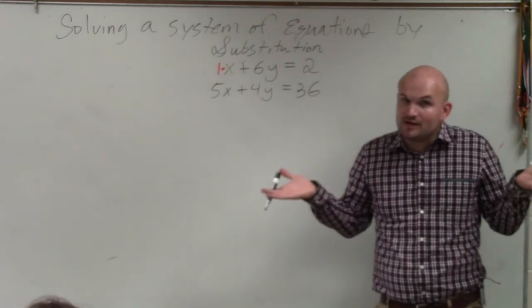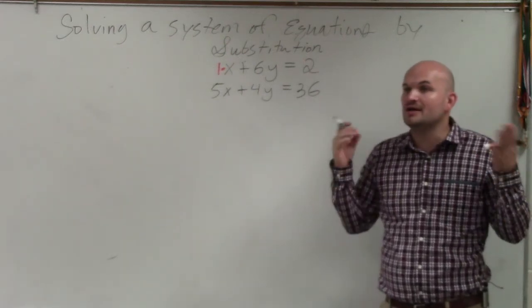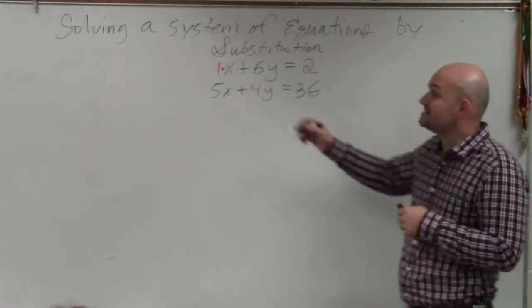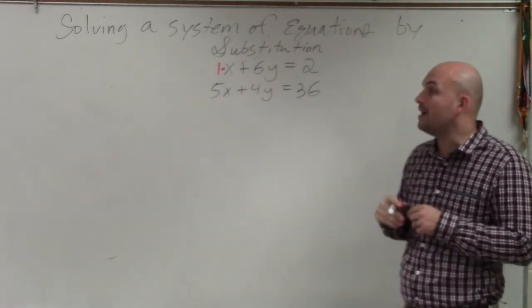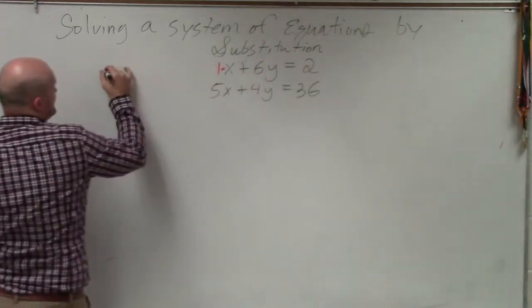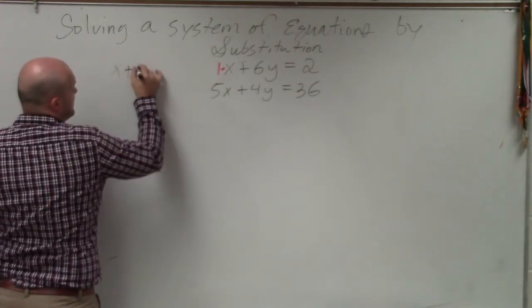If you have multiple variables with coefficients of 1 and negative 1, just pick one. And again, you don't have to use a variable, but I'll explain why. Step two is to solve for that variable using inverse operations. So I'm going to take this equation, and I'm going to solve it over here.